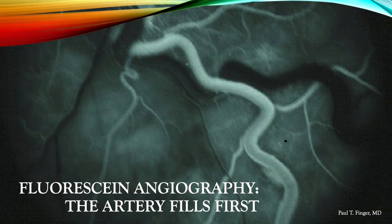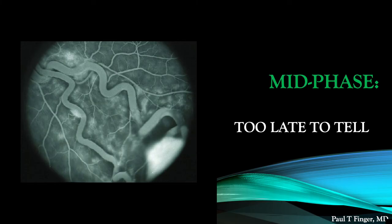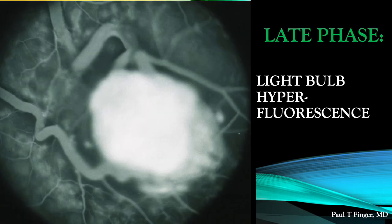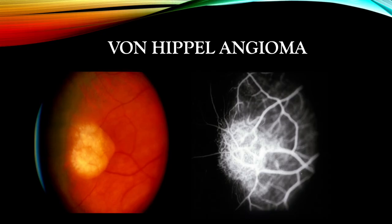In this early phase fluorescein angiogram, the artery is perfused and the vein is not. In the mid-phase angiogram, it already shows how difficult it can be to differentiate the feeding artery from the draining vein. In the late phase, as the tumor blood vessels leak, it appears like a light bulb of hyperfluorescence with leakage into the overlying vitreous. Note the yellow retinal tumor with dilated afferent and efferent blood vessels. Though this is an early phase angiogram demonstrating the lacy intrinsic vascularity of the tumor, it is already too late to reveal which is the artery and which is the vein.